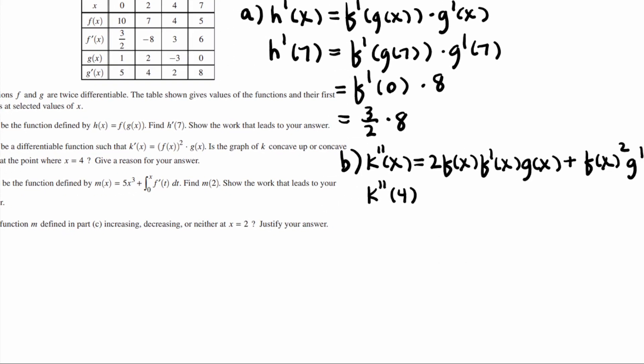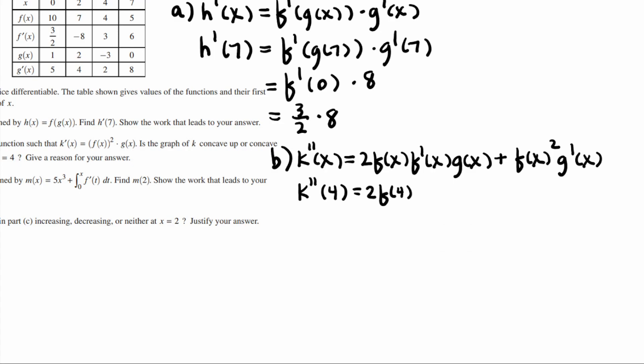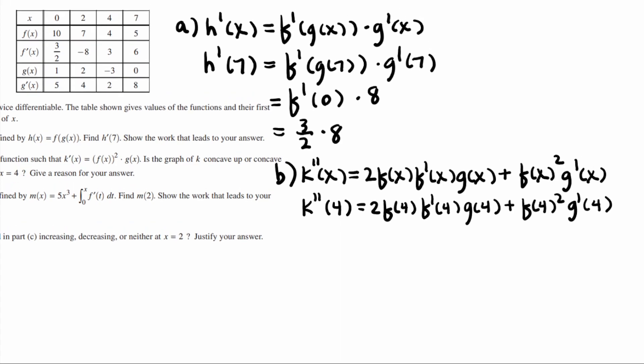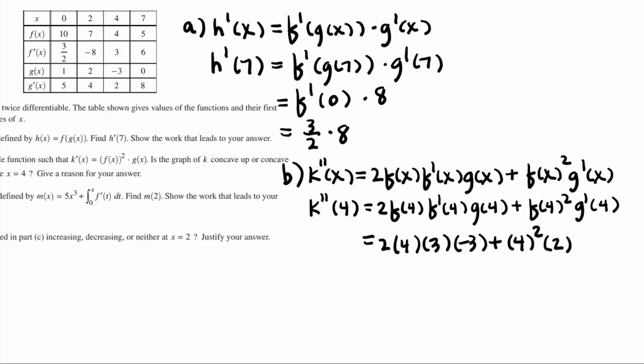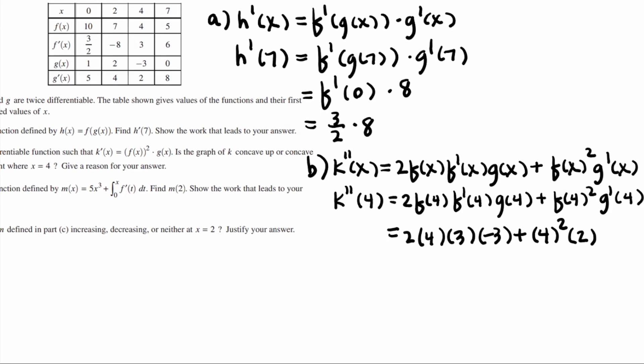And so we're going to test the value of k double prime of 4. Because they're asking if it's concave up or concave down at x equals 4. So that's going to be 2 times f of 4 times f prime of 4 times g of 4 plus f of 4 squared times g prime of 4. This is a good problem here. It's one I'm very likely to use on a test next year in my class, I think. So at this point, we're just going to need to look up some numbers. 2 times f of 4, 2 times 4. f prime of 4 was 3. And g of 4 is equal to negative 3. Plus f of 4 squared. f of 4 is equal to 4. Times g prime of 4 is 2. And again, we're not going to simplify this because that would be a waste of time, right? We could spend that time working on another more difficult problem.